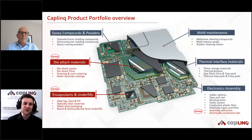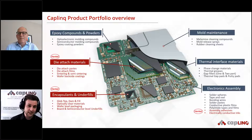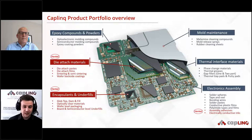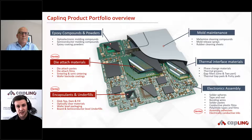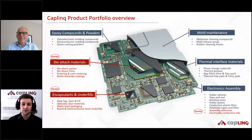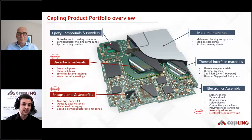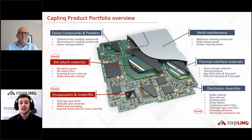Briefly discussing the products we can offer: across the printed circuit board are semiconductor molding compounds. For Henkel specifically, our partner die-attached materials such as die-attached paste, die-attached films with sintering and semi-sintering materials, and encapsulants and underfills — both globtop, dam-and-fill, optically clear materials, and wafer level packaging materials.